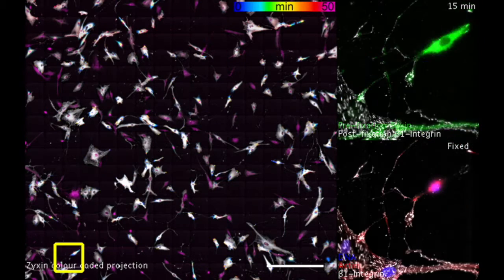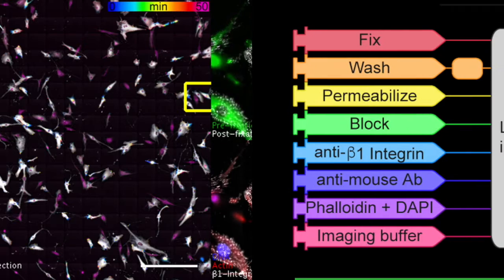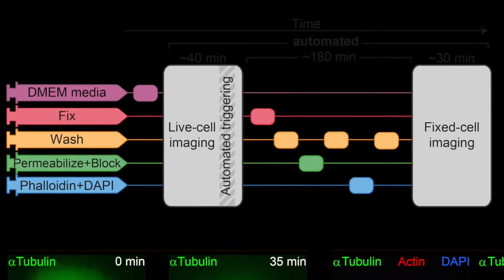For example, here we started a live cell experiment where we detected cells entering mitosis and triggered the labeling sequence followed by large multicolor imaging.